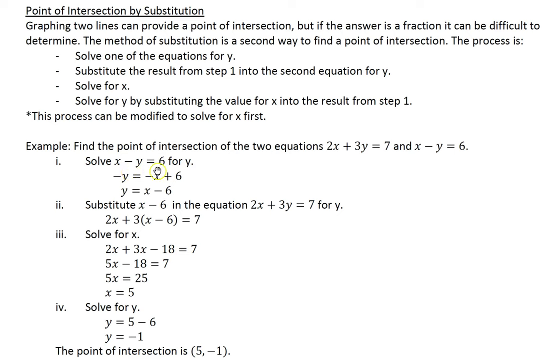I took x minus y equals 6 and solved it for y by subtracting the x from both sides of the equation and then dividing everything by negative 1 since there was a silent coefficient of negative 1 in front of y.